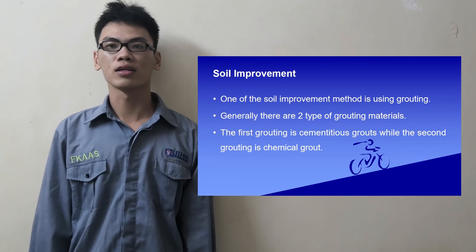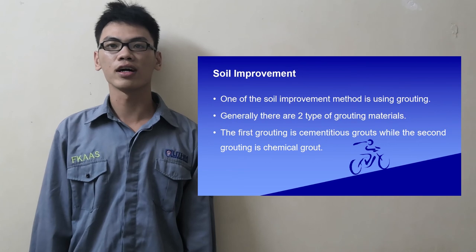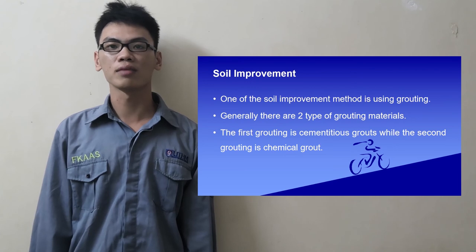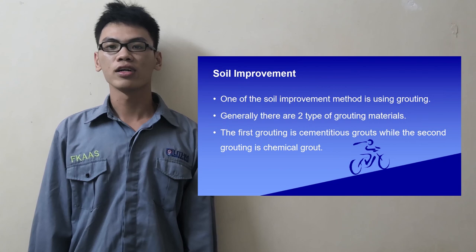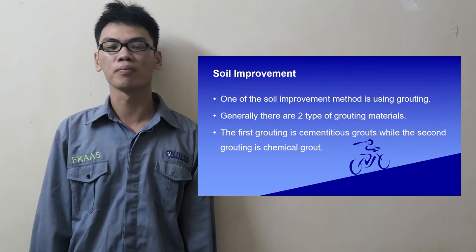I will now talk about the soil improvement method we use for our project. One of the methods is grouting — a special injection of liquid into the ground to improve the strength of the soil. Generally, there are two types of grouting material: cementitious grout and chemical grout. For our project, we are using jet grouting, which is a grout treatment technique where a thin-consistency soil-cement grout is ejected into the loose soil at high velocity to form a solid concrete matrix.